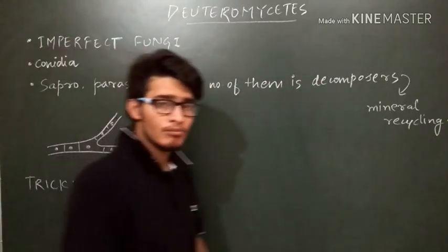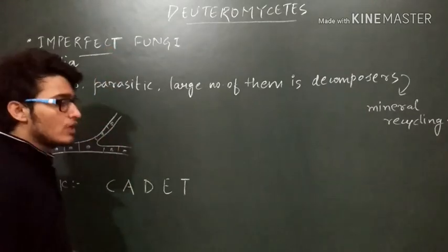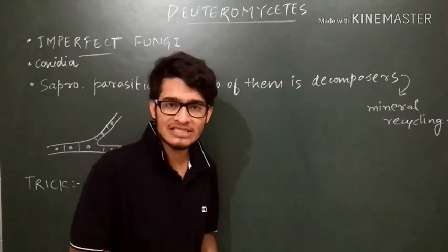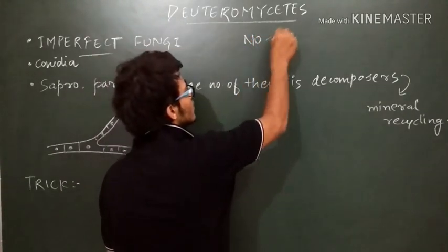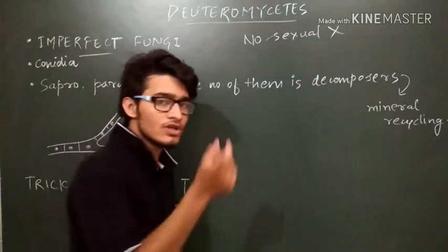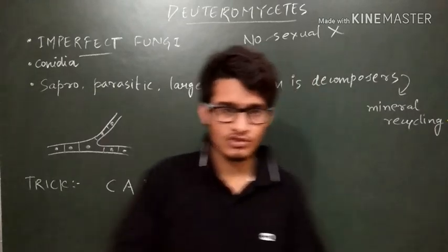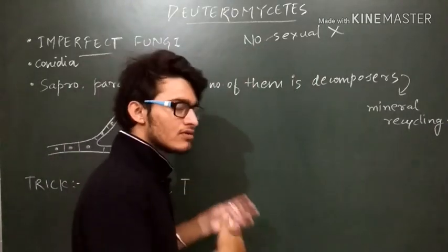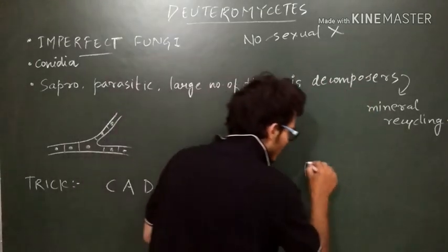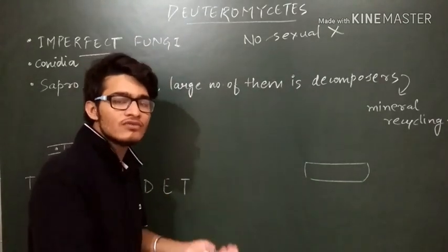Deuteromycetes are known as imperfect fungi. The meaning of imperfect fungi is simply that only asexual stages are found — only asexual modes of reproduction are found in Deuteromycetes. There are no sexual modes of reproduction, and due to the lack of sexual reproduction, these are known as imperfect fungi. Some scientists are trying to divide the fungi using different criteria, making a separate class for all fungi that do not reproduce sexually.